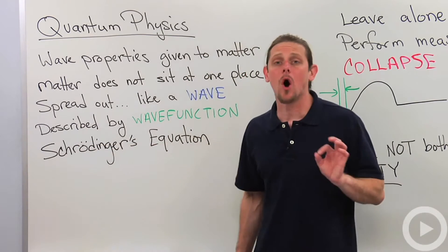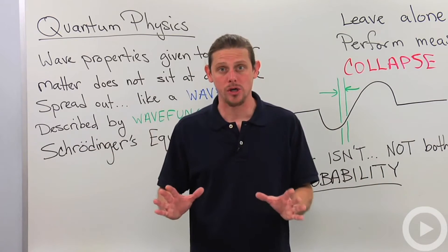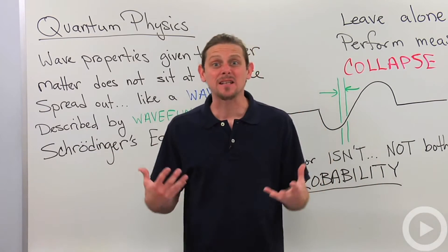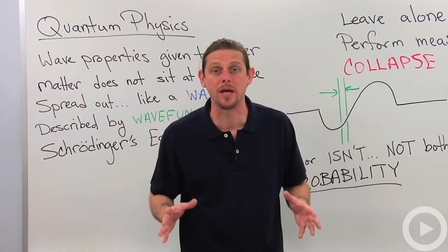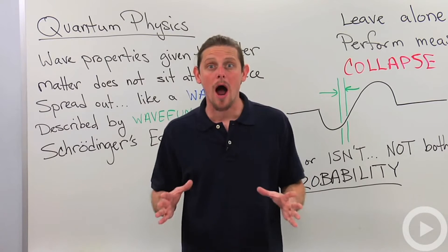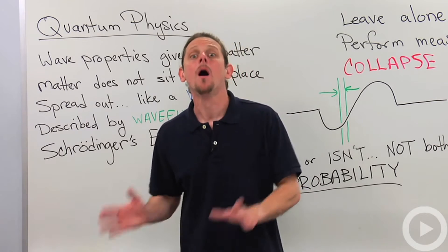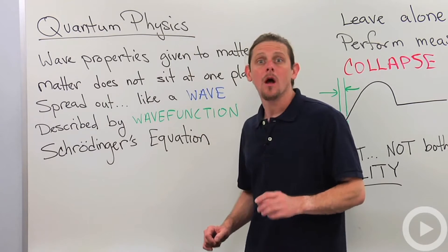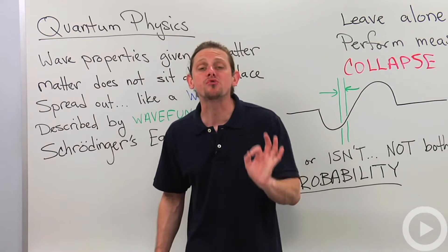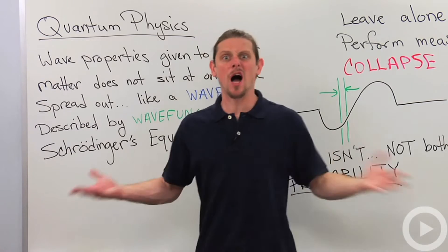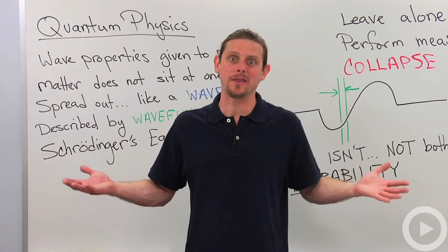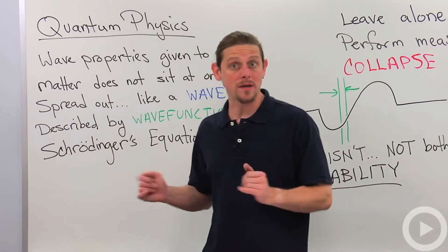All right, so it's described by something called a wave function. And so that's going to take the place of a position, a momentum, and all those things. Instead of that, we describe the behavior of a particle by its wave function. The wave function satisfies something called Schrodinger's equation, which kind of takes the place of conservation of energy, you can think of it that way, in quantum mechanics.